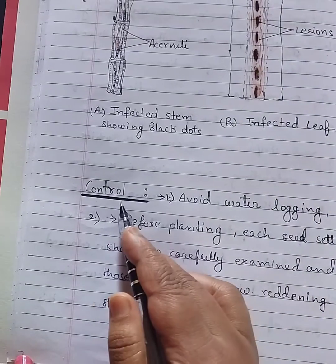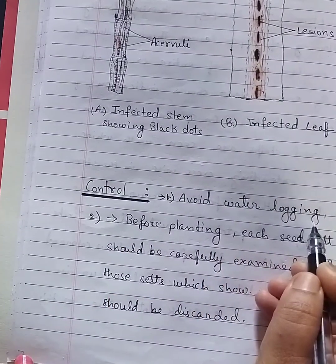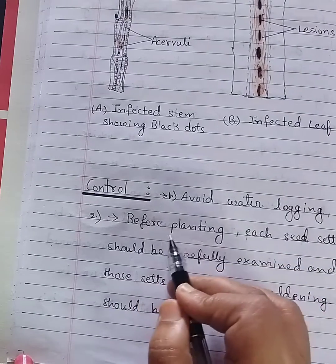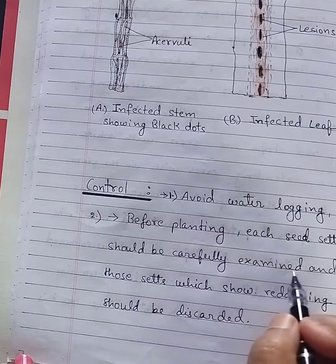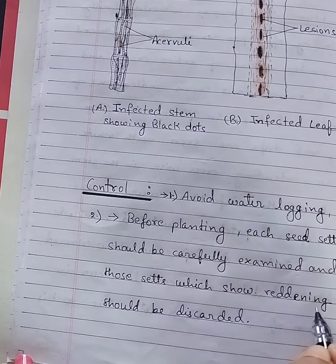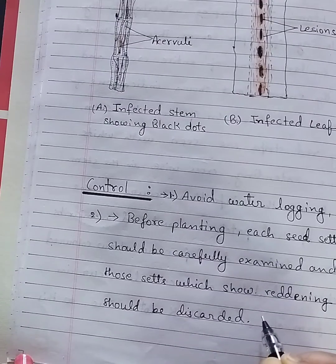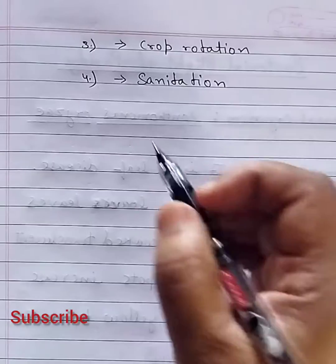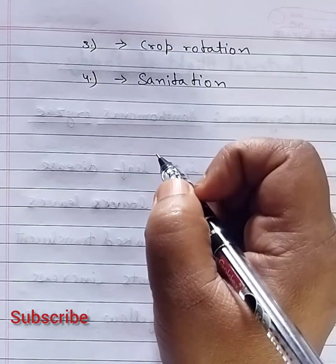Control measures: First, avoid waterlogging. Second, before planting, each seed set should be carefully examined and those seeds which show red coloration should be discarded. Third, crop rotation. Fourth, sanitation.